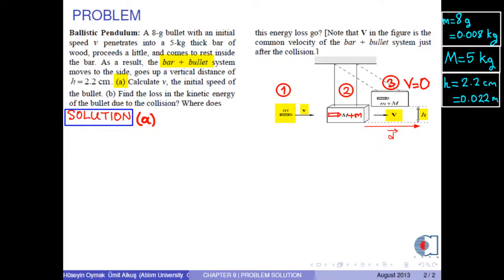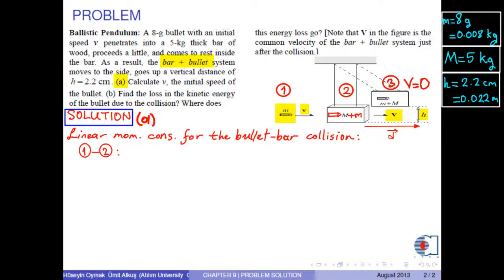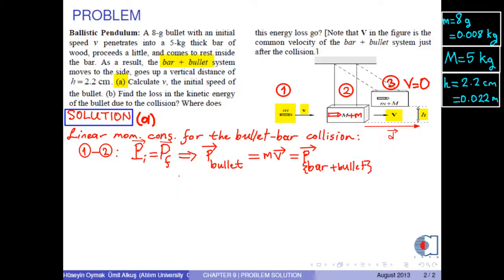In all collisions, the total linear momentum of the system is conserved. So, for the linear momentum conservation of the bullet-bar collision, from positions 1 to 2, initial total momentum equals final total momentum. Initially, we have only the linear momentum of the bullet, that is M times V. Finally, we have the linear momentum of the total system — bar plus bullet — with the formula M plus capital M times capital V.